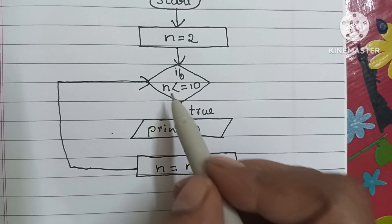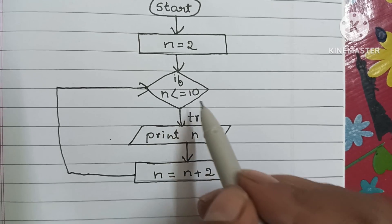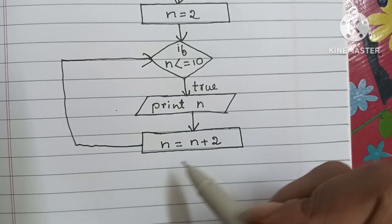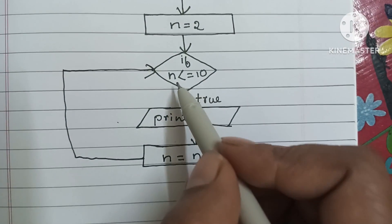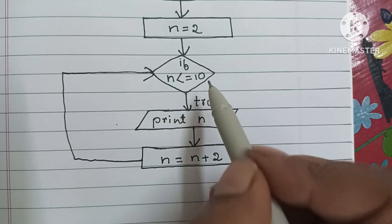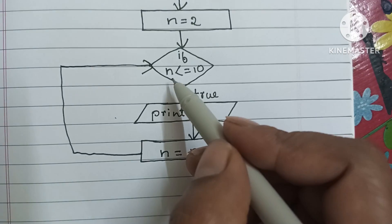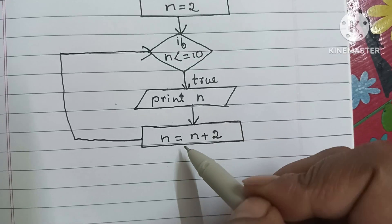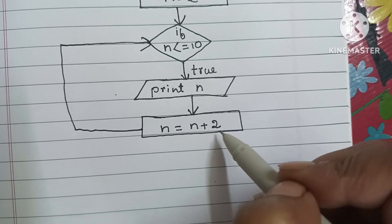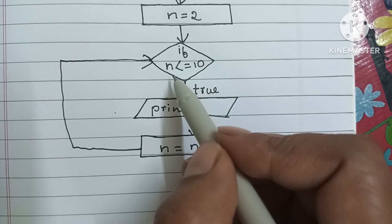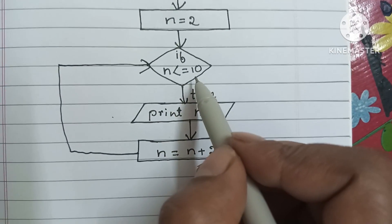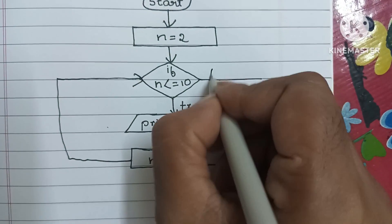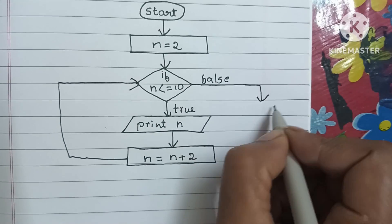It will execute, print the n value, and again increase the value by 2. When 4 plus 2 becomes 6, and when n reaches 10 — comparing 10 less than or equal to 10 — it is true, so it prints 10. Then n becomes 10 plus 2 equals 12. When n is 12, we check 12 less than or equal to 10, which is false since 12 is greater than 10, so it executes the false branch.